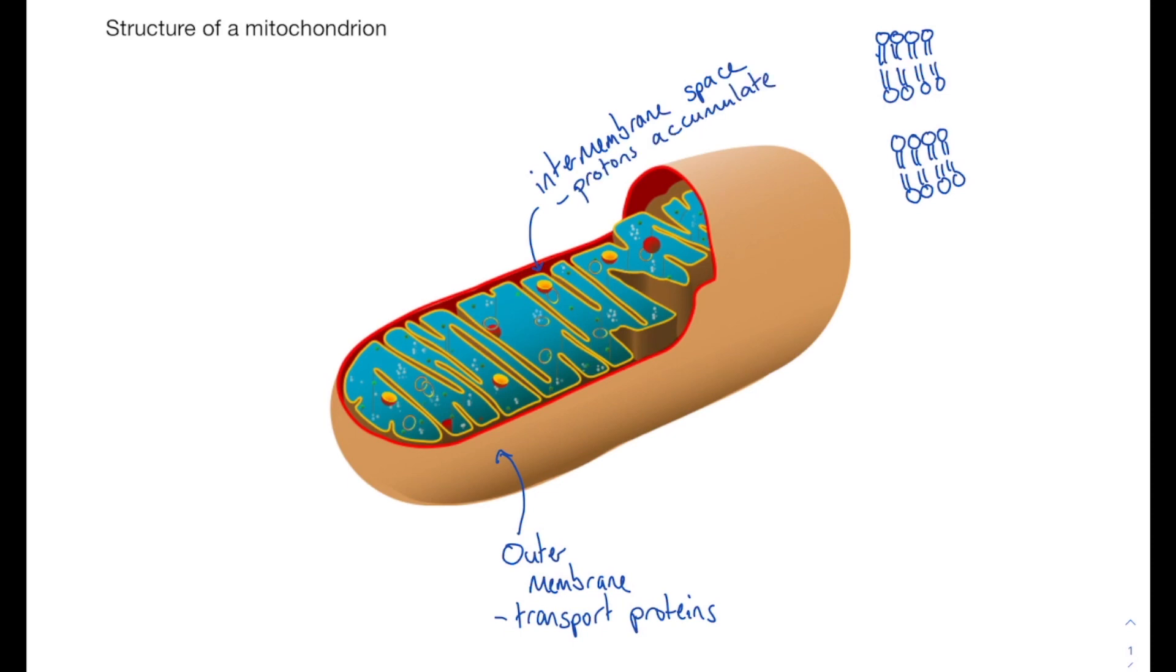Next, working our way further inwards, we have the inner membrane and this contains the electron transport chain and ATP synthase, which are vital for oxidative phosphorylation, which is where the bulk of your ATP is made during aerobic respiration.